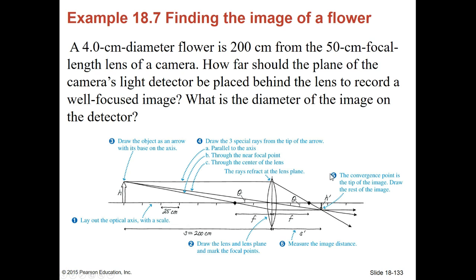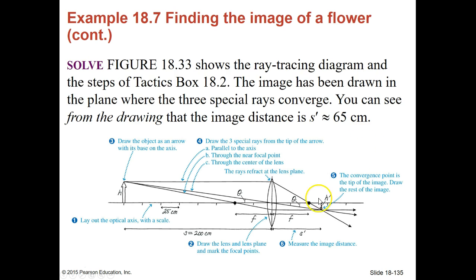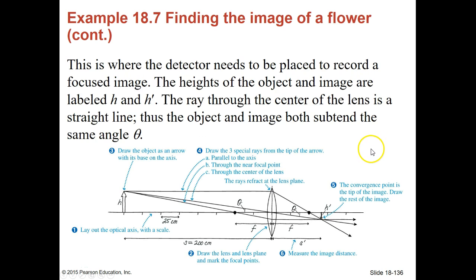This is a sample math problem called finding the image of a flower. Here we have a 4-centimeter diameter flower about 200 centimeters from a 50-centimeter focal length lens of a camera. How far should the plane of the camera's light detector be so that we will get a really nice focused image? The flower's in the object plane, and we're going to use ray tracing to figure out where it goes. We're actually going to use the thin lens equation in order to do that, so we'll take a look at it in class.